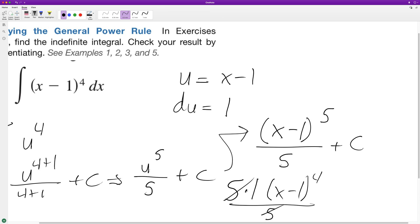Five cancels out and we're just left with x minus one to the fourth, and then the derivative of the constant c is just zero.